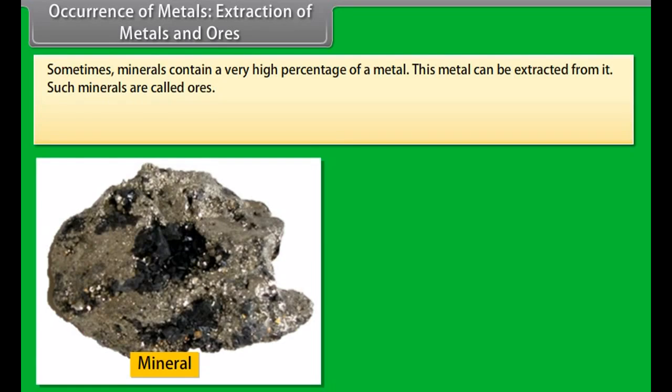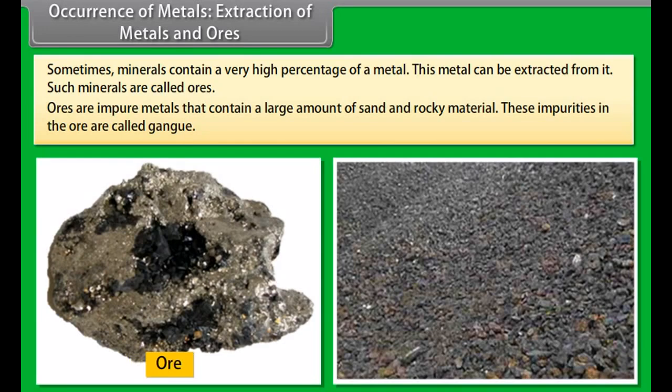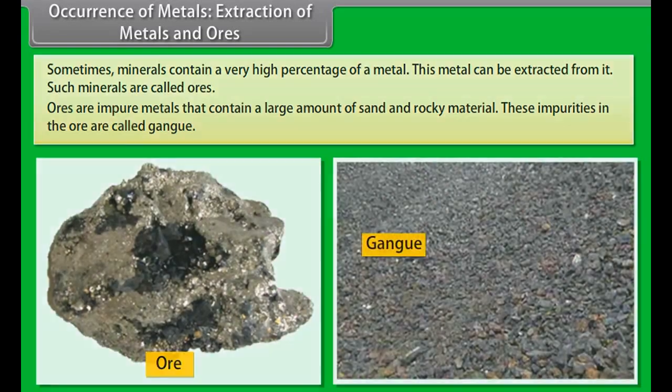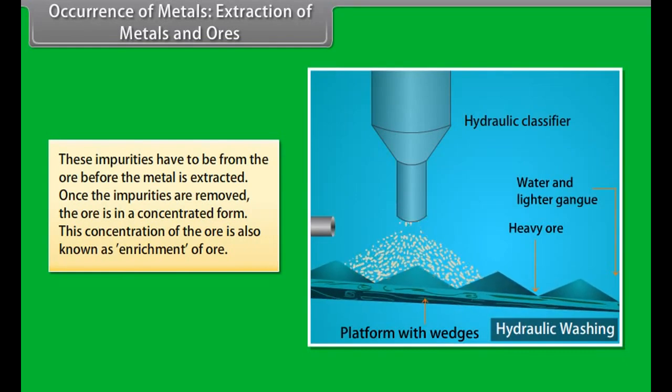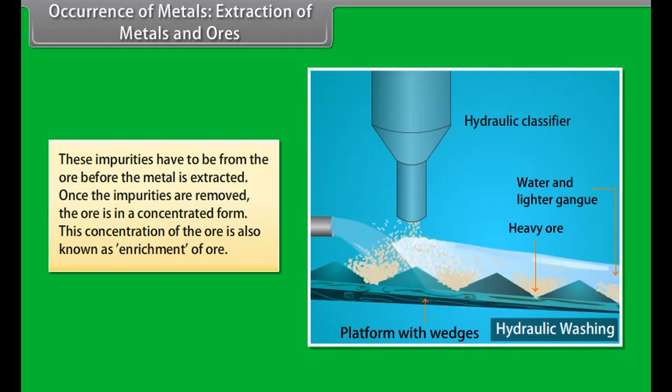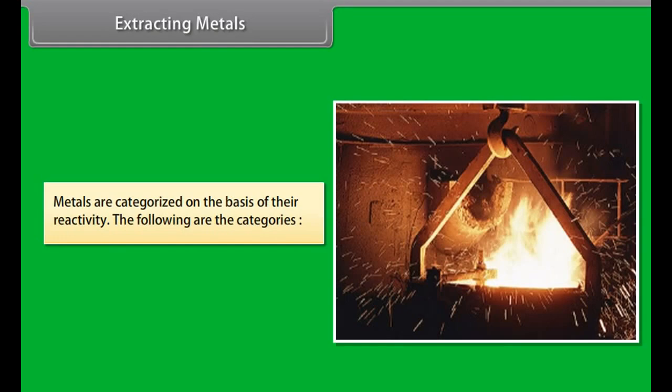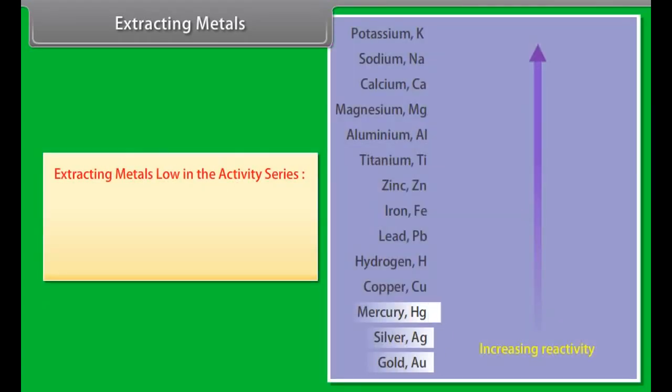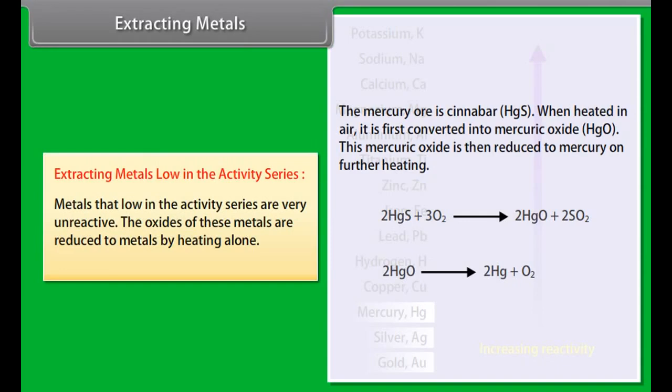Occurrence of metals: Extraction of metals and ores. Earth is the major source of metals. However, seawater also contains some soluble salts. Minerals are the elements or compounds which occur naturally in the earth's crust. Sometimes minerals contain a very high percentage of a metal. This metal can be extracted from it. Such minerals are called ores. Ores are impure metals that contain a large amount of sand and rocky material. These impurities in the ore are called gangue. These impurities have to be removed from the ore before the metal is extracted. Once the impurities are removed, the ore is in a concentrated form. This concentration of the ore is also known as enrichment of ore.